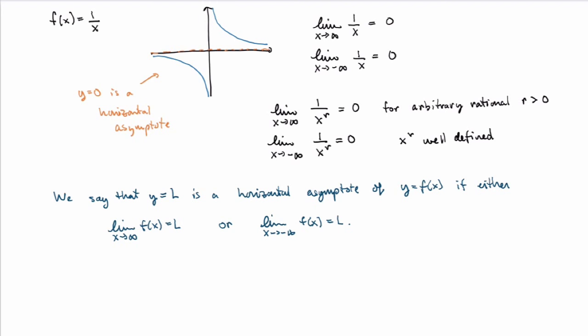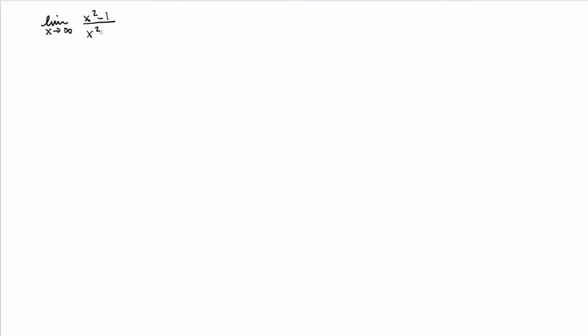How do we evaluate limits at infinity for complicated functions? Using those two simple limits and the limit laws we saw previously, we can evaluate limits for many more complicated functions. Consider the limit as x goes to infinity of x squared minus 1 over x squared plus 1. We could sketch the graph — using Wolfram Alpha, for example — and we'd see that as x becomes very large positive or negative, the function approaches y equals 1, which is a horizontal asymptote. But we want to evaluate the limit without first sketching the graph.